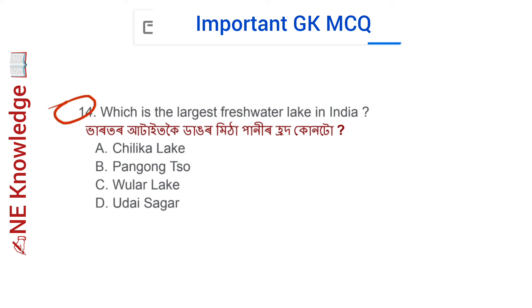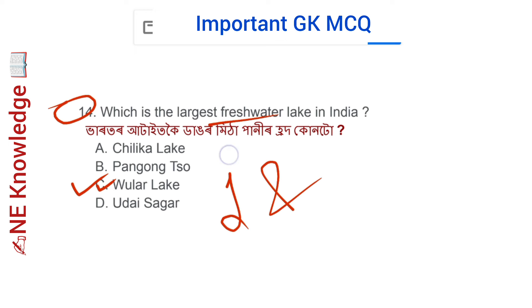Question number 14: Which is the largest freshwater lake in India? Options include Chilika Lake, Pangong Lake, Wular Lake, and Udai Sagar. Correct answer: Option C — Wular Lake. Wular Lake, situated in Jammu and Kashmir, is the largest freshwater lake in India.